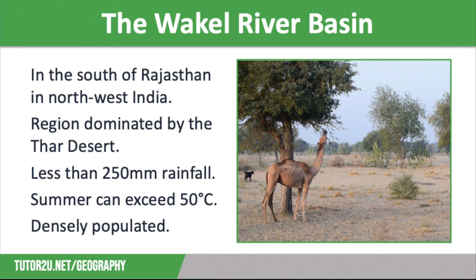Despite the harsh conditions, the area is quite densely populated, so there is a great demand for water. The little water available has been managed poorly — too much irrigation has led to waterlogging and salinisation, which has destroyed crops. Over-abstraction by pumps has also been a huge issue, leading to the water table dropping significantly and wells drying up. Water use in this area is unregulated, meaning water sources have no time to recharge, and water scarcity is a big issue.